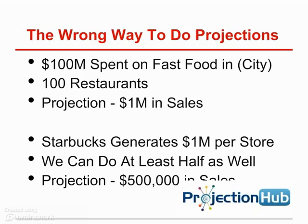There are two common ways entrepreneurs try to project sales — they take the easy way out. The first is a top-down approach: let's say there's $100 million spent on fast food in city XYZ, there are 100 restaurants, so average sales must be $1 million per store. I think our new restaurant can be average, so we'll assume $1 million in sales for the first year.